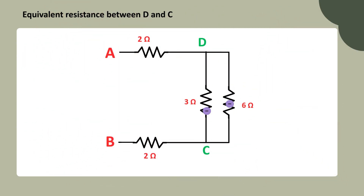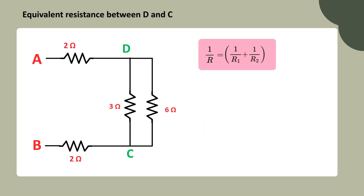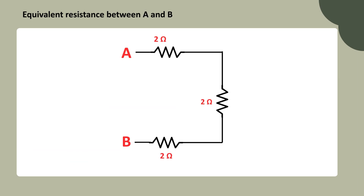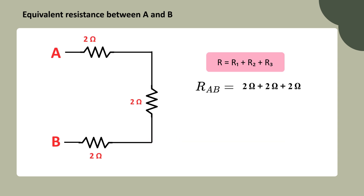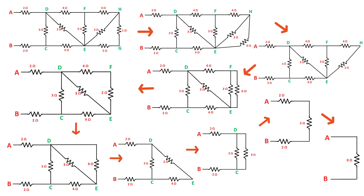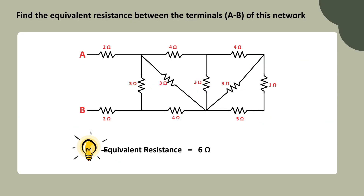The current splits through the 3 ohm and 6 ohm resistors, so they are in parallel, giving an equivalent resistance of 2 ohms. Simplify the circuit using this 2 ohm equivalent resistance. After simplifying, the same current flows through all three resistors between A and B, so they are connected in series. The equivalent resistance is equal to 6 ohms. After a few steps and observing the current flow, we finally get the equivalent resistance between terminals A and B as 6 ohms.